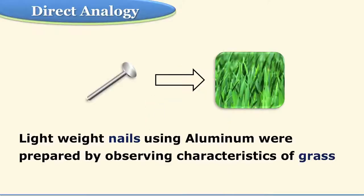Another example: we all know about nails, used everywhere in preparing furniture. Previously nails were made of iron, but iron nails have two limitations — they are hard so they cannot bend easily, and they rust. The idea came by watching grass. The grass leaf is flexible but somewhat sturdy. So, could we prepare nails something like that? Then aluminum nails came into existence — they are sturdy but they can be bent, and for all electrical wiring such nails are used.